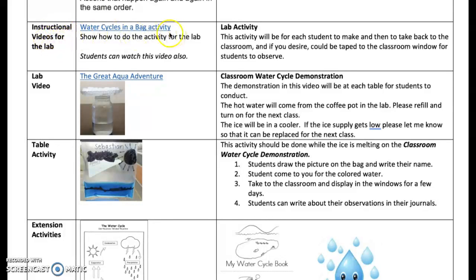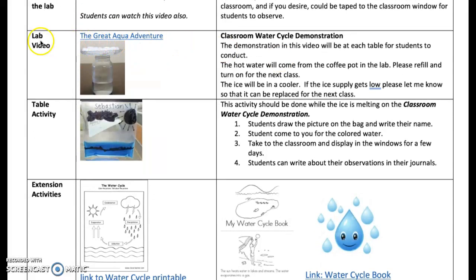The instructional video for the lab — you need to watch this video. It shows how to do the activity that's going to be in the lab. This activity will be for each student to make and then take back to the classroom, and if you desire, you can tape it to the classroom window for the students to observe. When you get to the lab, the 'Great Aqua Adventure' is the video that you will show. In the video, there is a demonstration on a classroom water cycle, so you'll have to watch the video. You may want to watch it yourself first, and then watch it again in the lab with the kids.